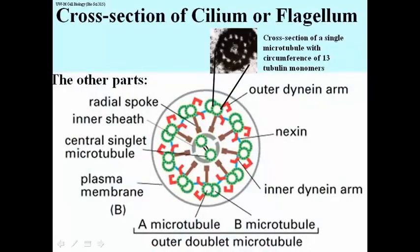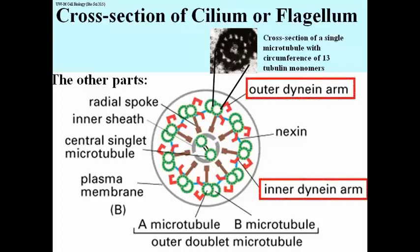The doublet microtubules are connected to one another by these blue structures called nexin. The doublets also have motor proteins — in fact two dynein molecules on each of the doublets. We talk about an outer and an inner dynein arm. These are the motor proteins that can extend from one doublet to the next, allowing one doublet to move along the other.